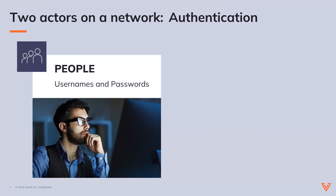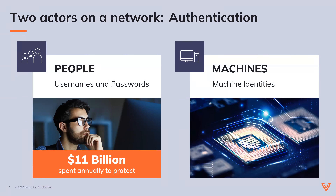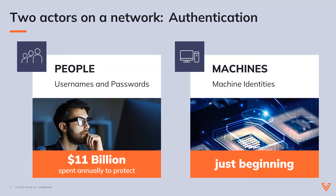On every network, there are two entities: people and machines. People identify themselves using usernames and passwords, and machines talk to one another throughout the network using machine identities. The number of machine identities is increasing exponentially because digital information is built using machines, not people. These identities get stolen, and globally the world spends about $11 billion a year protecting human identities, while spending hardly anything on protecting machine identities.